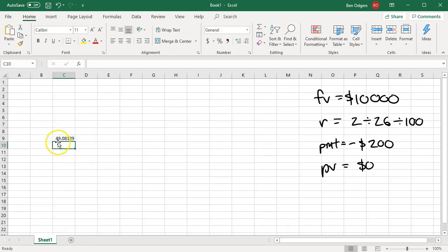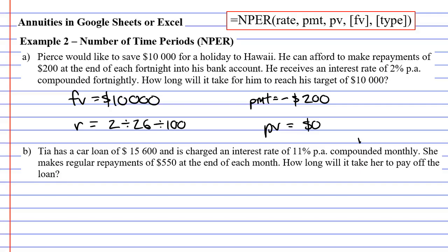It's a little more than 49, let's say 49.08. Coming back to this screen, for NPER we got 49.08. What does this mean? It represents the number of time periods required for Pierce to raise $10,000. Remembering that our time periods are fortnightly, so slightly after 49 fortnights, Pierce will raise $10,000.